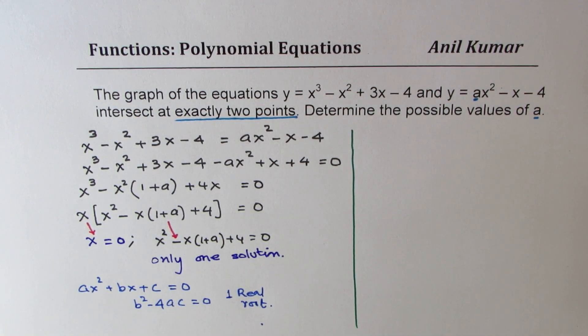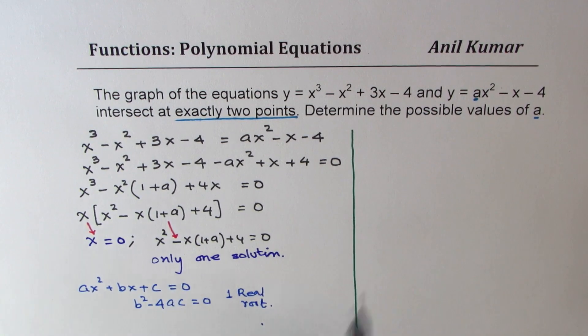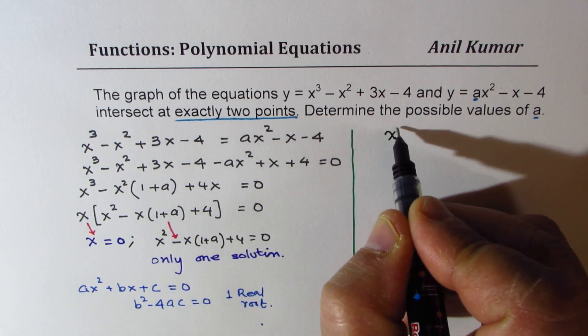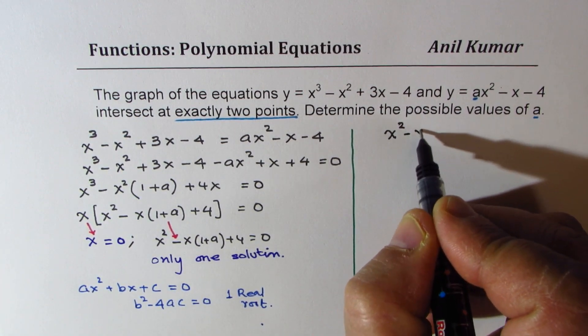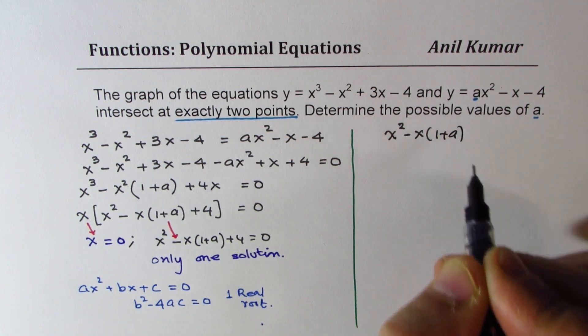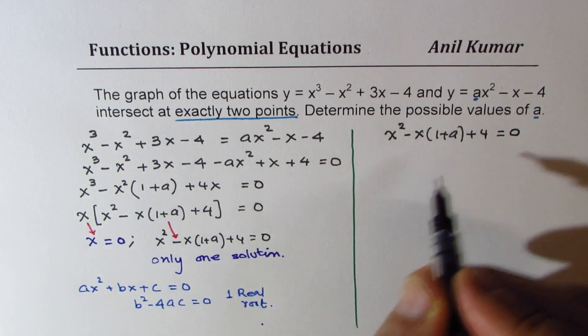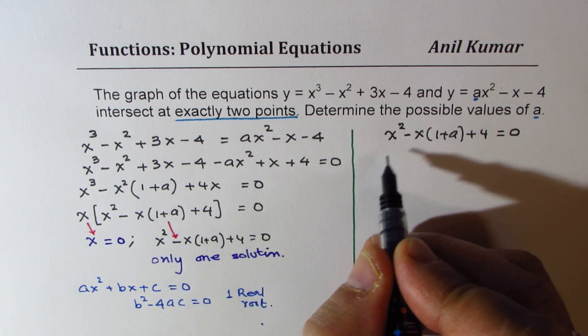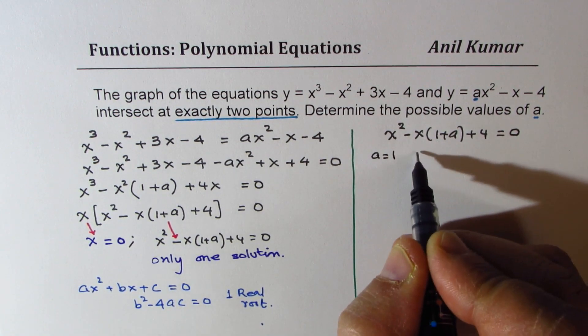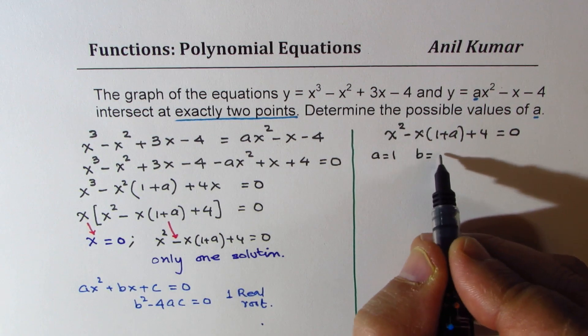So this is the concept which we are going to use now to get the answer. So what we are saying here is that we have this equation x squared minus x times 1 plus a plus 4 equals 0.